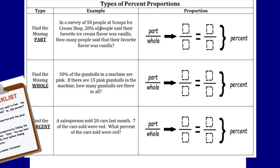In our first problem, the Scoop's ice cream shop had a survey of 50 people — this is going to be your whole amount. 20% of the people said that their favorite flavor was vanilla, so the 20% is your percent amount. Once you've identified everything, fill in your proportion with the given information. The whole is 50, the percent is 20 — that goes over 100, which is always the whole percent. You're looking for the part, which is the missing amount. So the proportion would have your variable n in the part section. Then you would solve it.